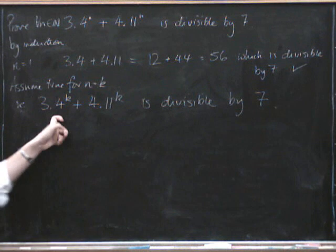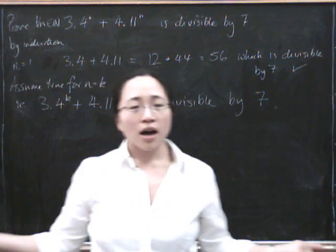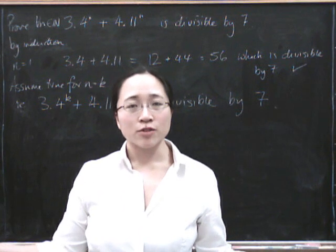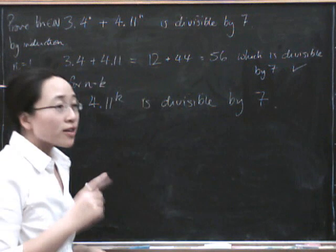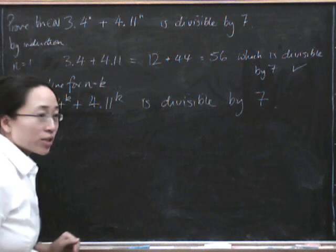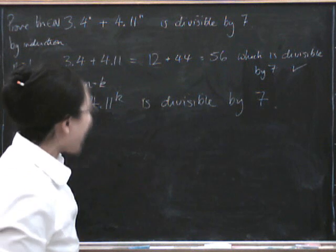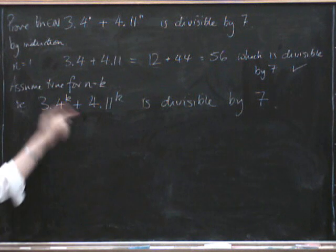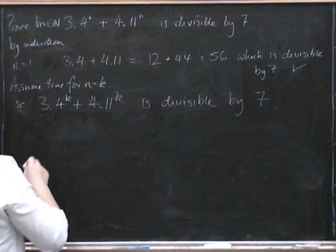Now, if you just look at that expression, how do we know whether that's divisible by 7 or not? Well, we're just going to show, we're not going to try and prove that this one is divisible by 7, we're just going to deduce that if that one is divisible by 7, then the next one up is as well.